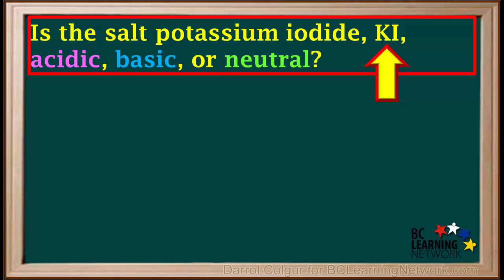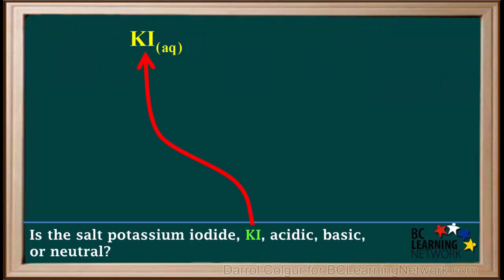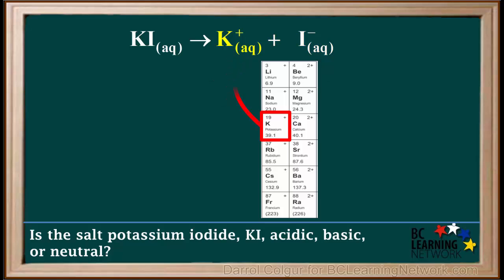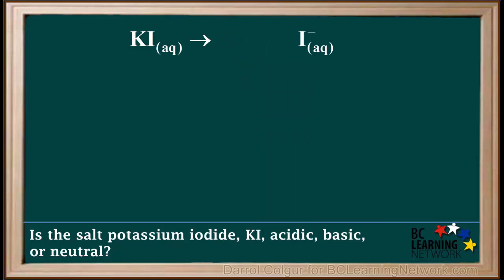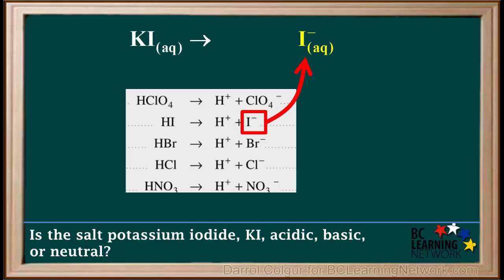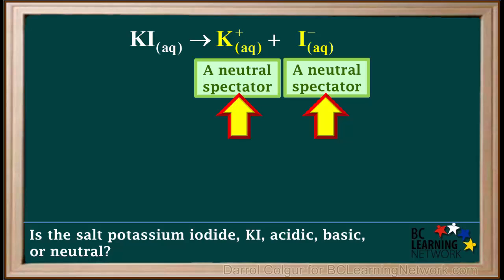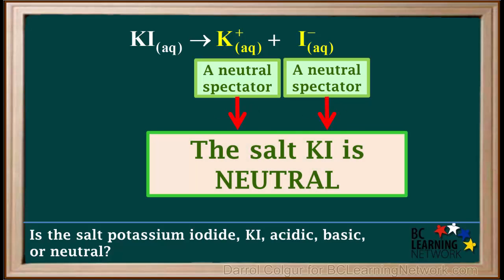Here's another example. We're asked to determine whether the salt potassium iodide, with the formula KI, is acidic, basic, or neutral when dissolved in water. We start by writing the dissociation equation: KI gives K+ plus I-. Now we eliminate spectator ions. K+ is in group 1, so it is a neutral spectator and can be eliminated. And I- is one of the top 5 ions on the right side of the acid table, so it is also a neutral spectator. Because both the cation and anion are neutral spectators, the salt KI is neutral.